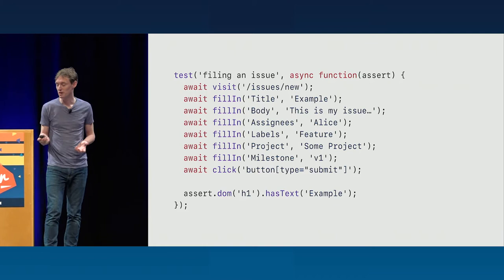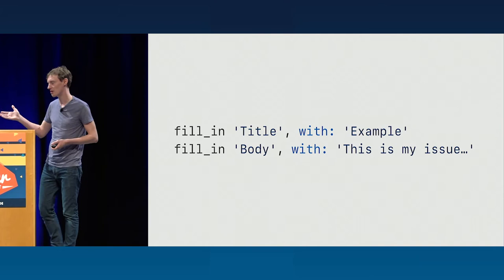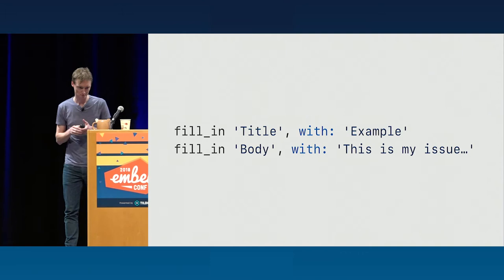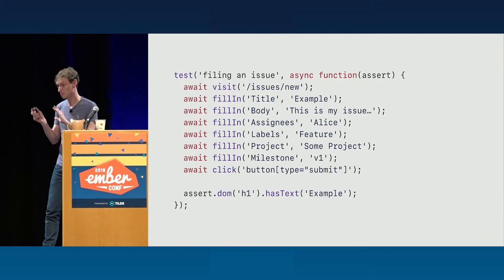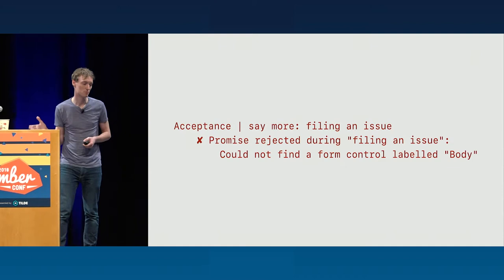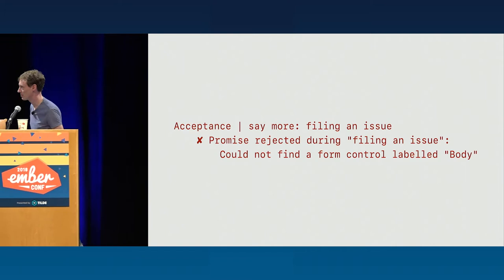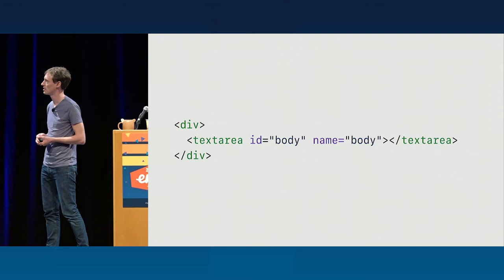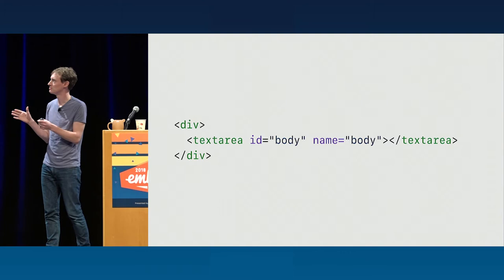If we wrote our test like this, Rubyists in the room will probably recognize this as basically what Capybara looks like — and in my experience, Capybara works quite well. Given our test in this form, set aside that it's more readable, we could find failures like this — failures that tell us a little bit more about how our app is misbehaving. This test failed because it could not find a form control labeled 'body.' I look at my hastily implemented template and find I missed the label off of the body text area.